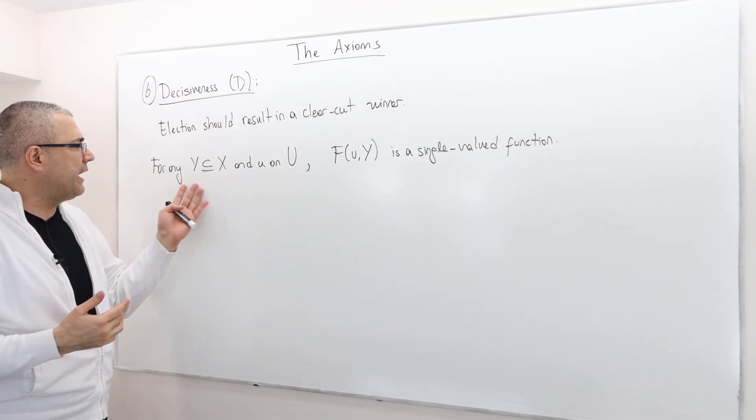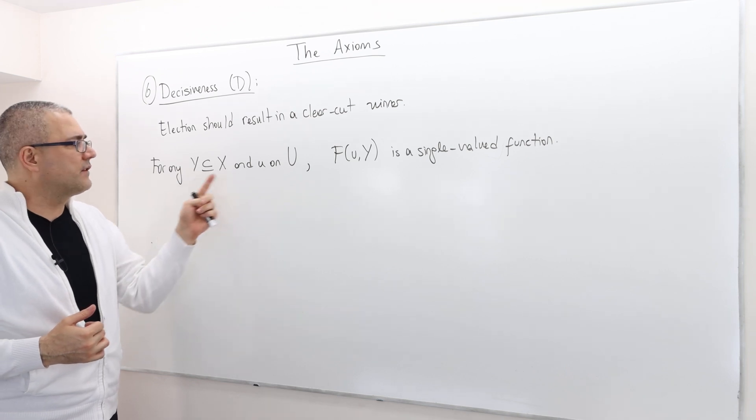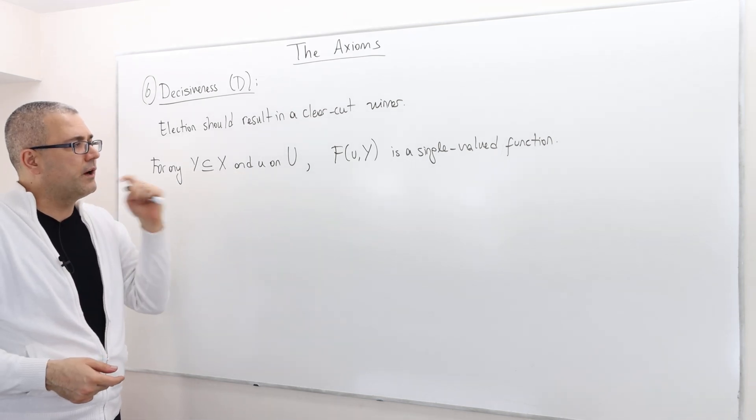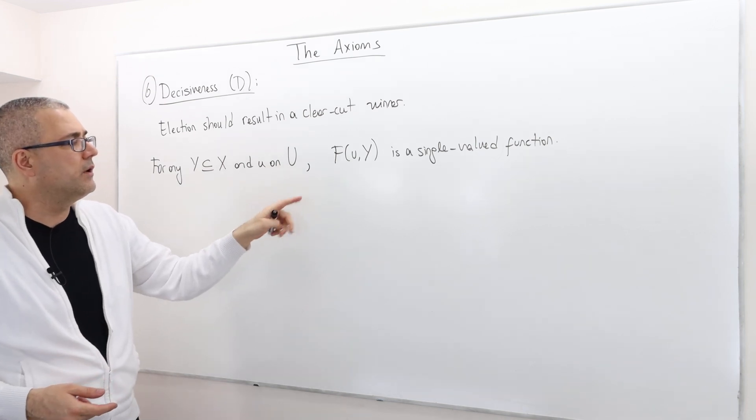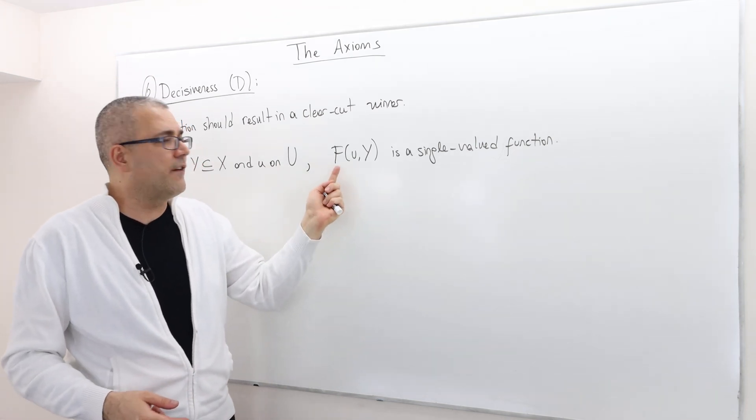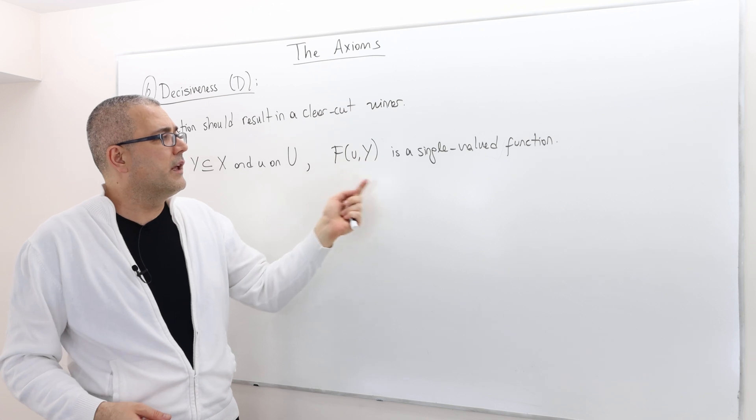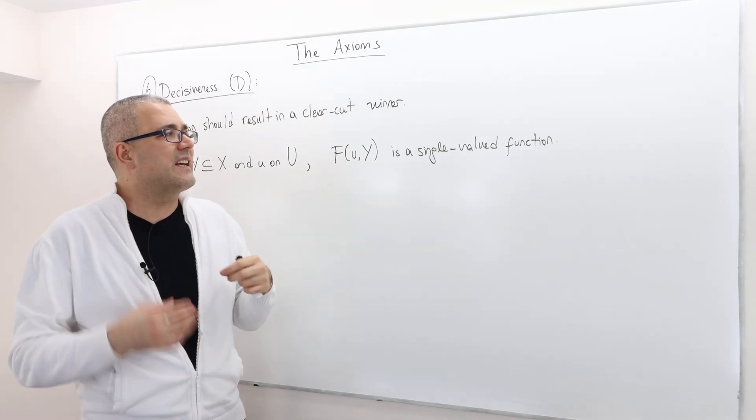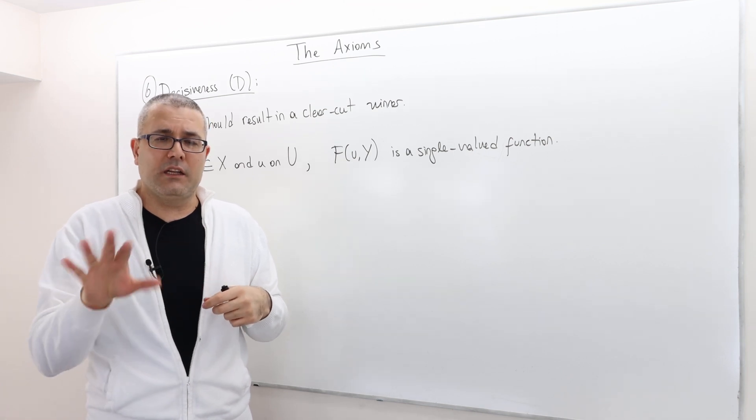Mathematically, that means for any y subset of x and for any preference profile u over the set of preference domain u, the winner f(u,y) is—I'm sorry, the voting rule f is a single-valued function, not a correspondence.